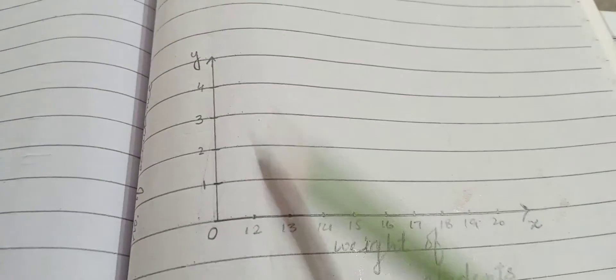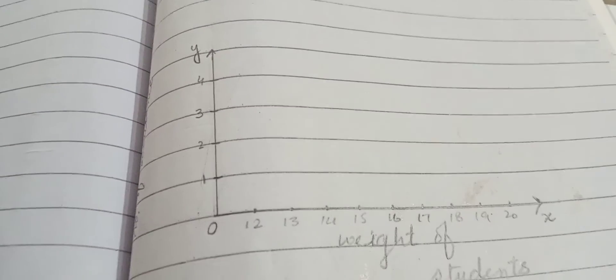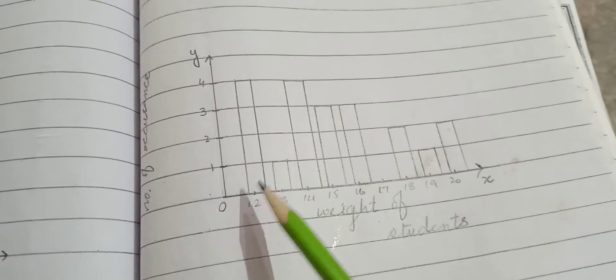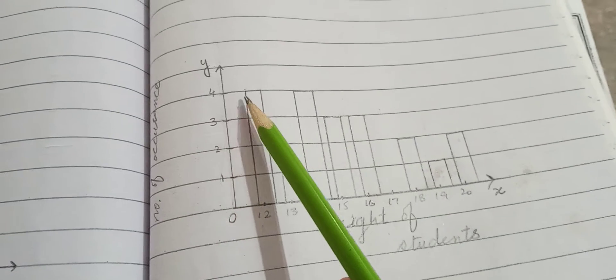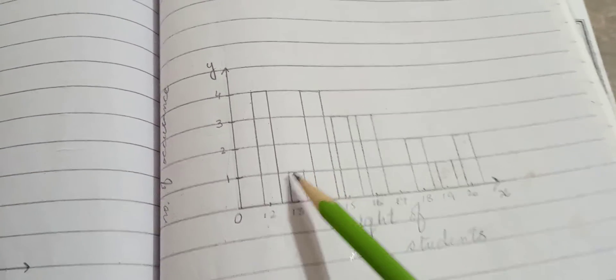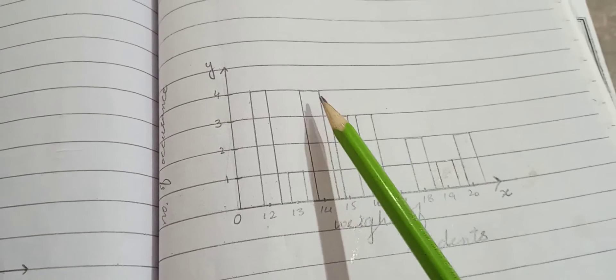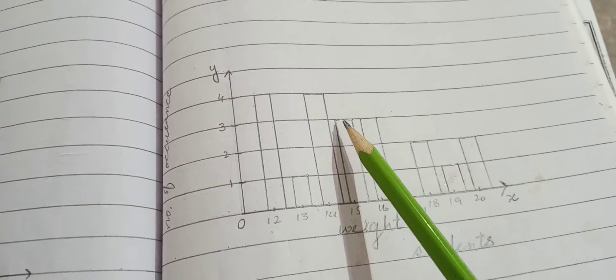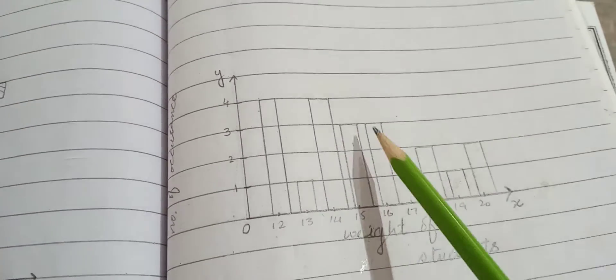We will draw the graph on the side of the y-axis. For 12 kg weight, we have 4 students. There are 14 kg weights with 4 students. 15 kg weight has 3 students.